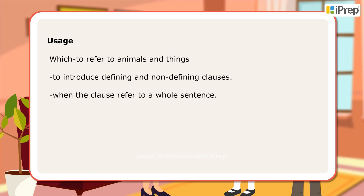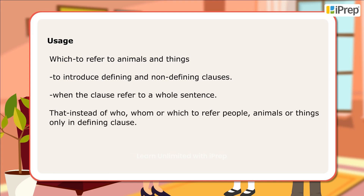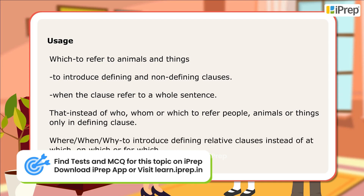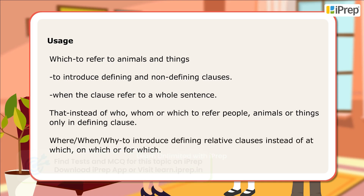'Which' is also used when the clause refers to a whole sentence. 'That' is used instead of who, whom, or which to refer to people, animals, or things, but only in defining clauses. 'Where,' 'when,' and 'why' are used to introduce defining relative clauses instead of 'at which,' 'on which,' or 'for which.'